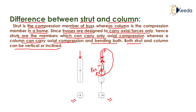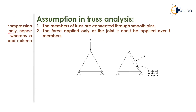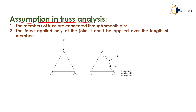Now we move on to the assumptions of the trusses in truss analysis. The first assumption is that the members of the truss are connected through smooth pins — at each and every joint there will be a smooth pin through which members are connected. The second assumption is that forces are applied only at the joints, not over the length of the member, because if a load is applied at the member then bending of that member will take place, and bending is not allowed in trusses.